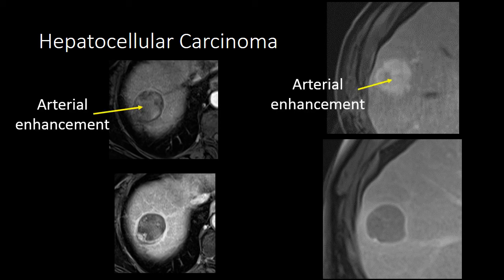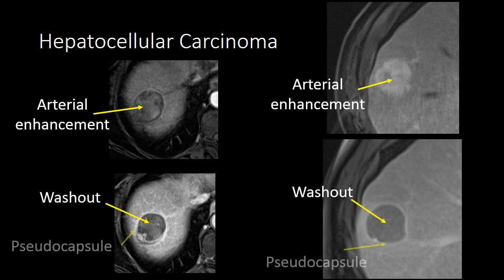Hepatocellular carcinoma presents with arterial enhancement, washout, and pseudocapsule. Washout means a decreased enhancement relative to background liver on delayed phase imaging. Pseudocapsule refers to a capsule-like appearance around the tumor within the liver.